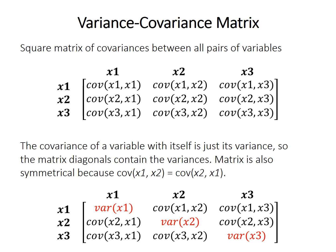The covariance of a variable with itself is just the variance, so the diagonals of this matrix contain the variances of each variable, and that's where we get the name variance-covariance matrix. The matrix is also symmetrical in addition to being square, because the covariance of x1 with x2 is the same as the covariance of x2 with x1.